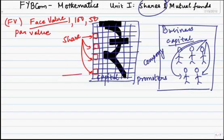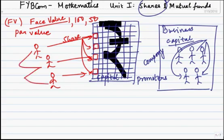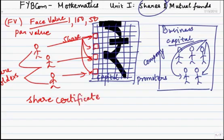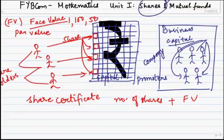These shares are purchased by people. The company gets the capital it requires by selling these shares. Those people who buy these shares are called shareholders. A shareholder is an individual who buys or possesses the shares of a company. The shareholder may have a single share or multiple shares. Each shareholder is issued a share certificate, which indicates the number of shares held by the shareholder and the face value of the share.